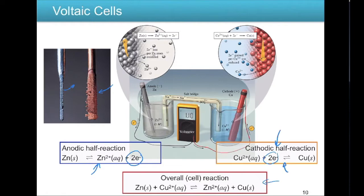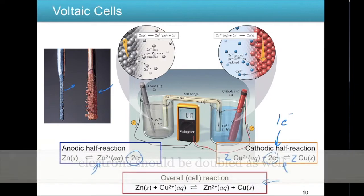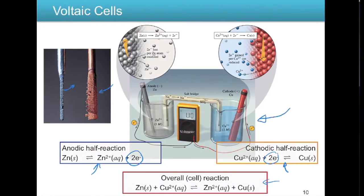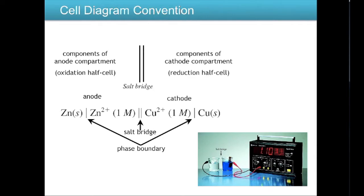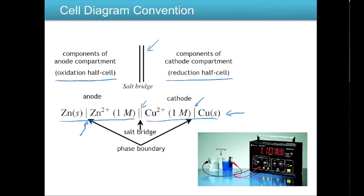If the electron counts don't match between half reactions, you multiply one reaction to equalize them. Rather than drawing full pictures each time, we write a cell diagram. The anode components appear on the left side of the salt bridge — shown by a double line — and the cathode components on the right. Single lines between components represent phase boundaries, indicating a solid in contact with an aqueous solution.